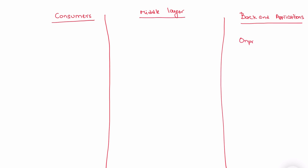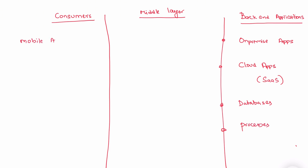The back-end application can be an application that runs on on-premise, or it can be a cloud application such as any SaaS application, or it can be a database server or database service, or any other process. On the consumer side, the consumers can be a mobile application, a web application, a desktop application, an IoT application, or any other service.